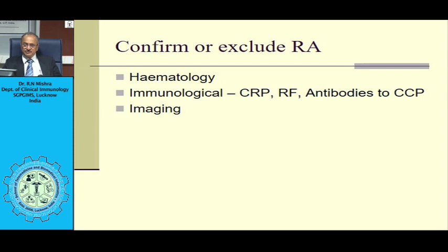Antibodies to CCP are diagnosed by ELISA and are more sensitive than rheumatoid factor. Rheumatoid factor is seen in 80 to 85 percent of rheumatoid arthritis and when positive, it is associated with severe erosive disease and extra-articular manifestations. There is no point getting rheumatoid factor done repeatedly; if initially negative, one can repeat after 6 weeks to confirm negativity, but once positive, you don't need to retest.